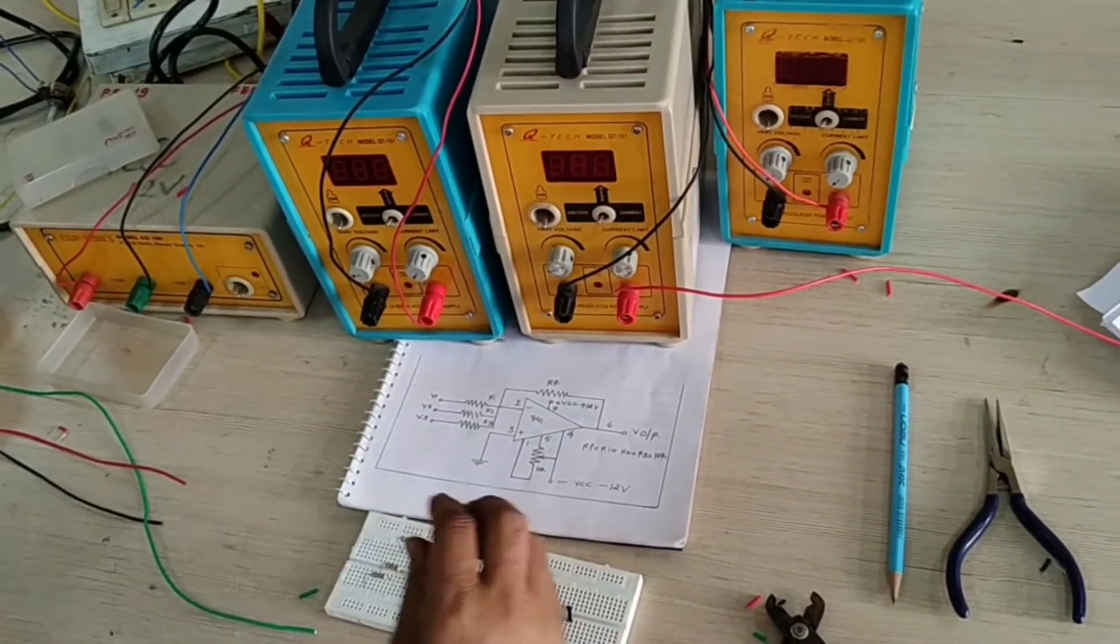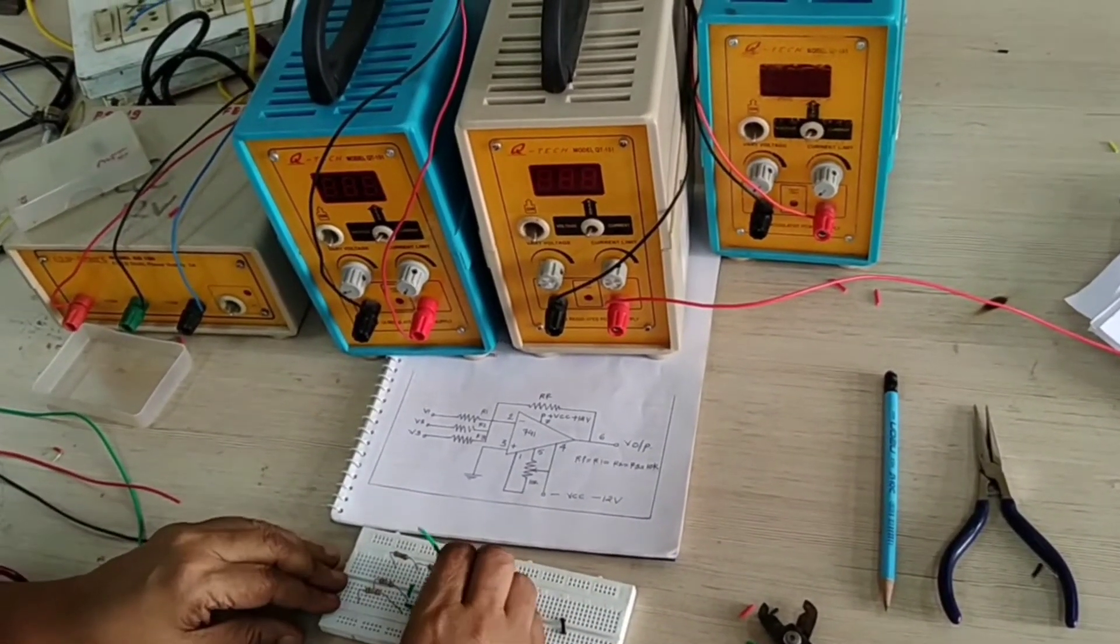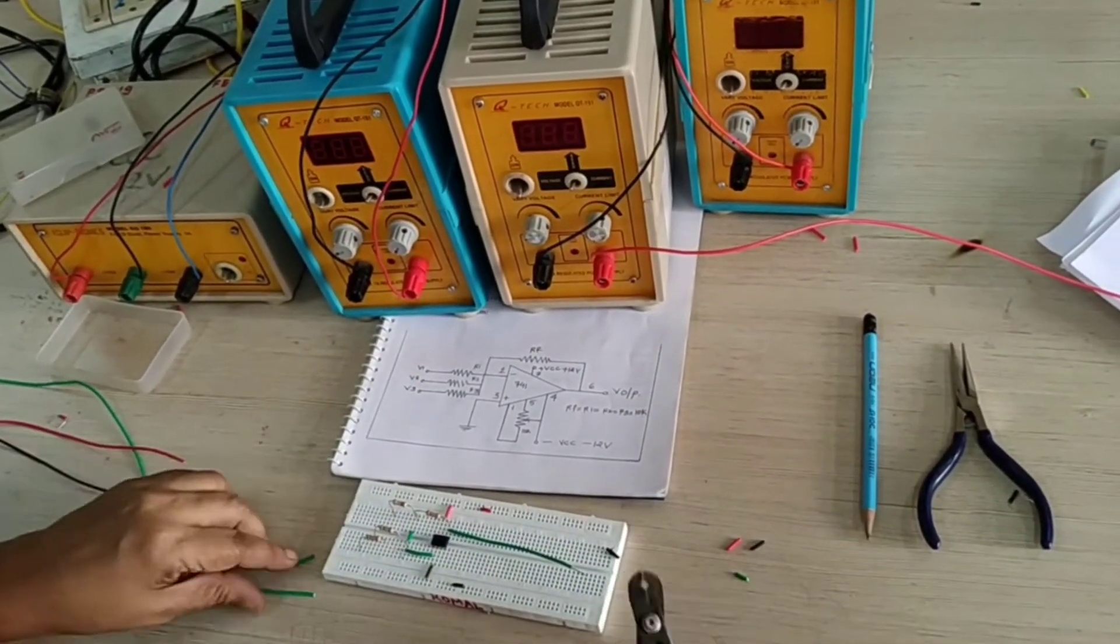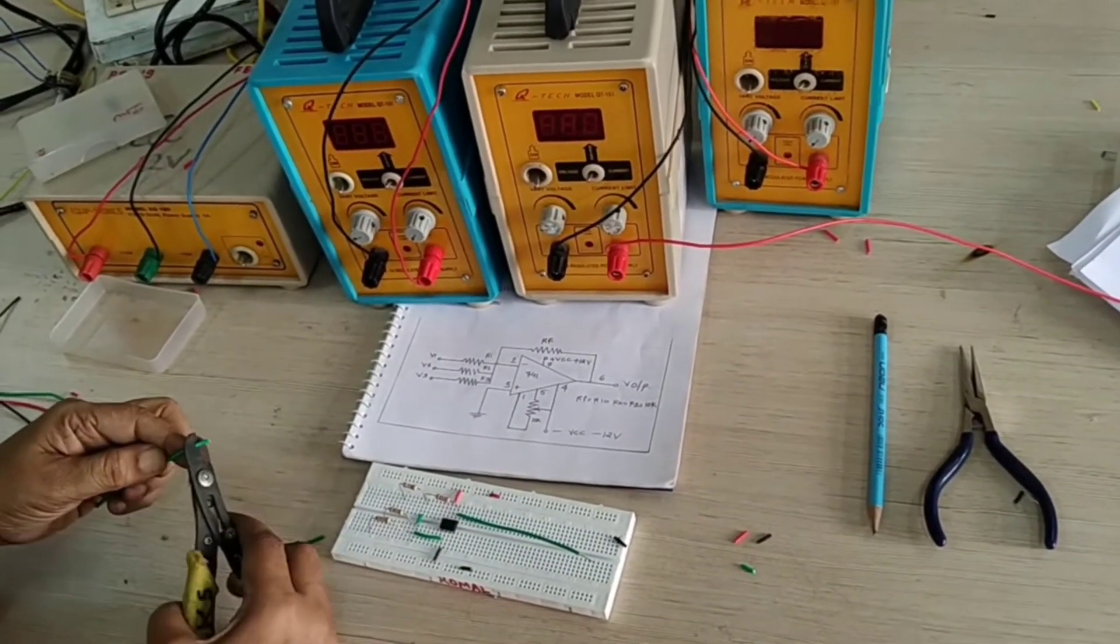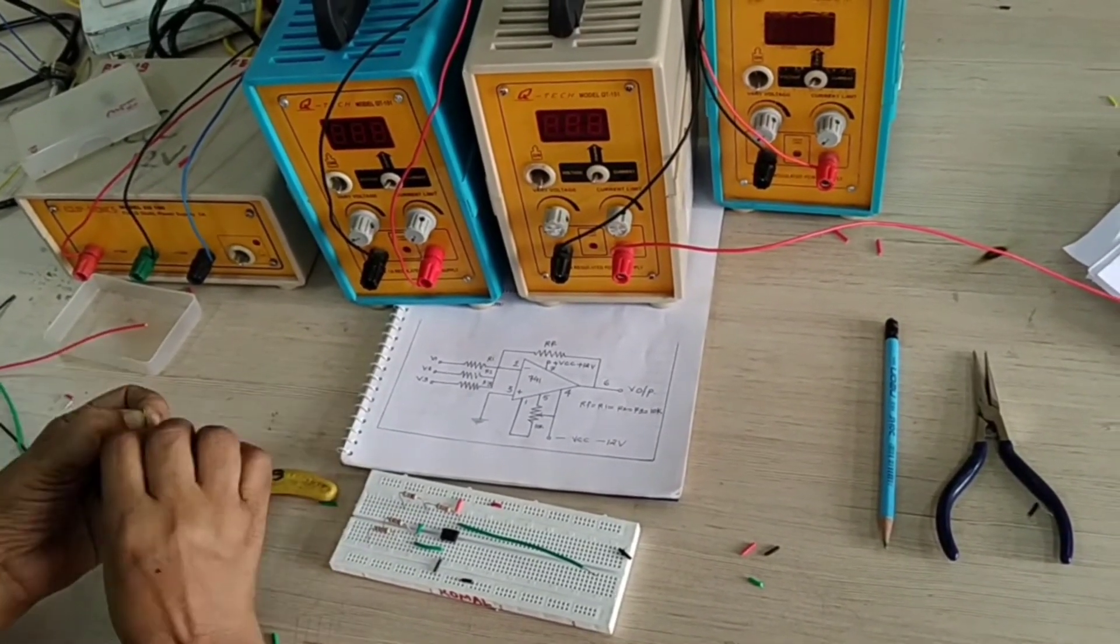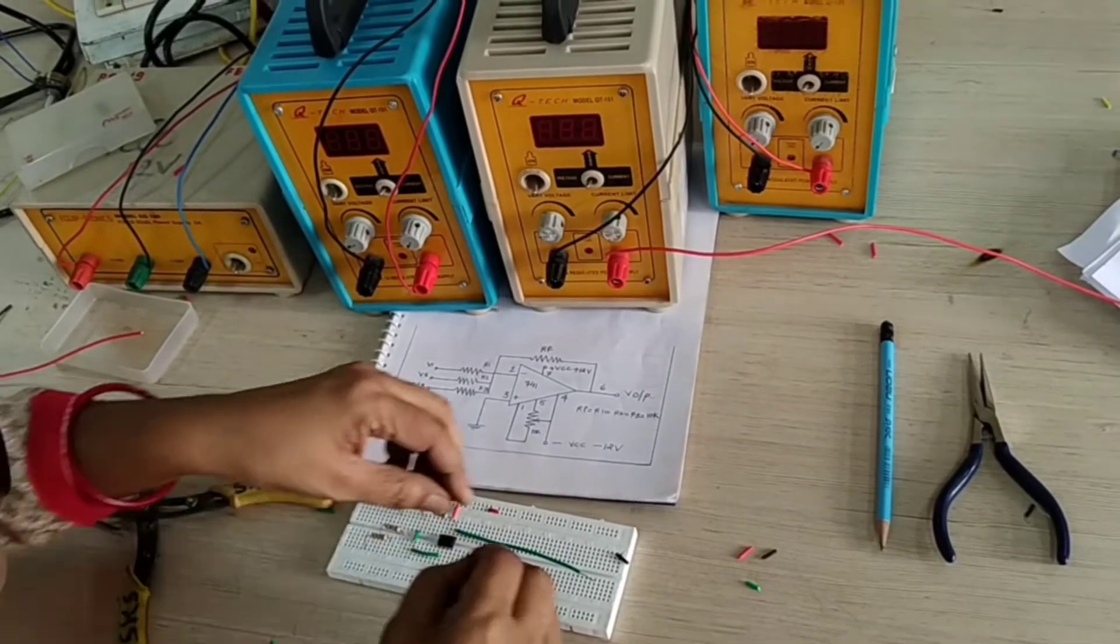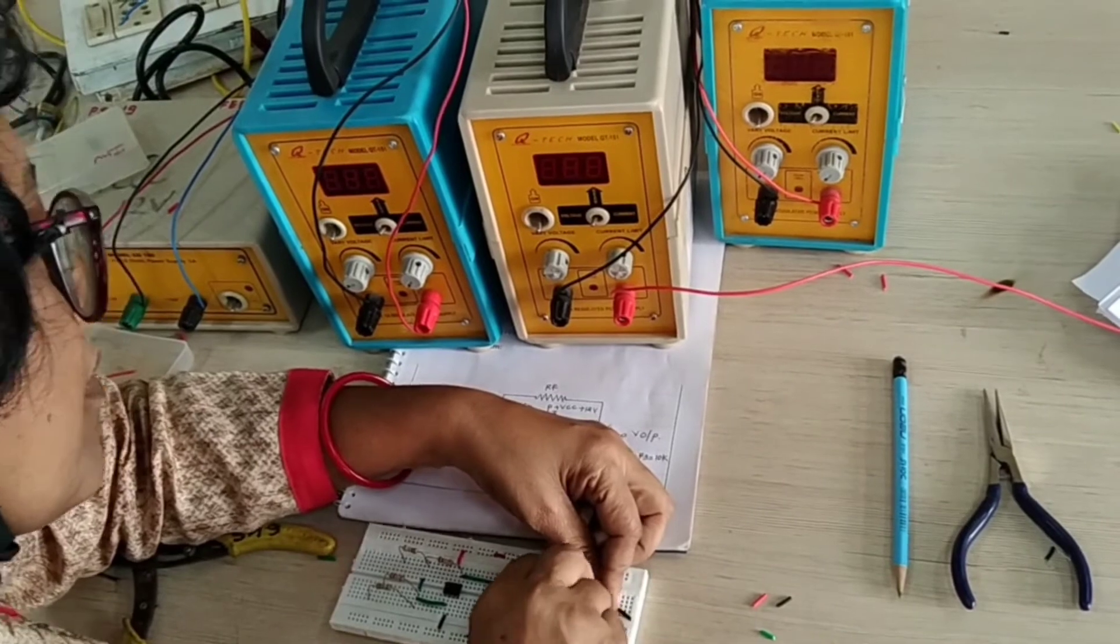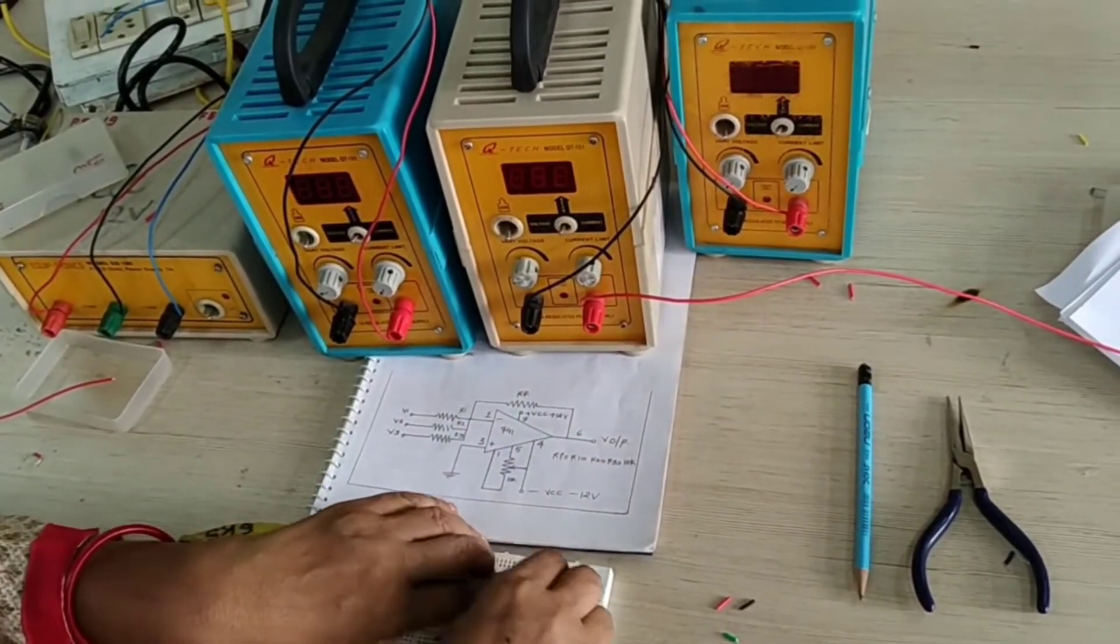And when we are connecting here, output, pin number 6, we are connecting like this here. So we will take one small wire here and we will pull here properly. This is your output.